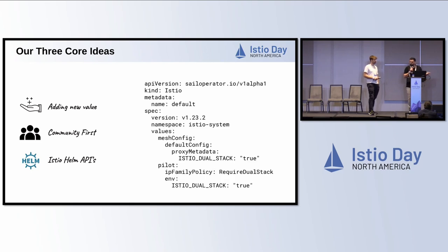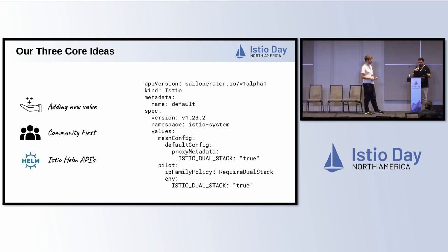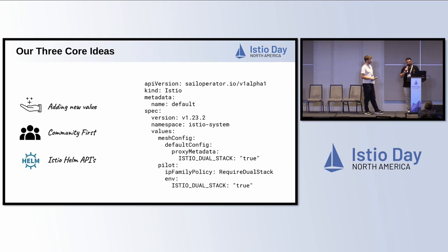For example, this is an Istio resource used by the Sail Operator. You can set with this simple configuration an Istio dual-stack cluster control plane, just by porting the spec values mesh config and setting Istio dual stack to true. If you already know how to configure Helm charts, it will be really easy to port this to the Sail Operator.